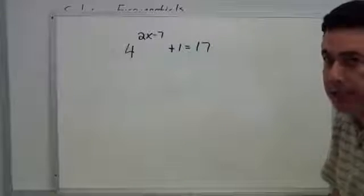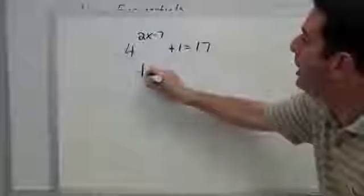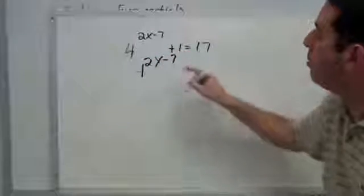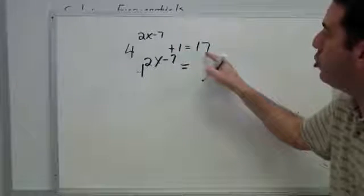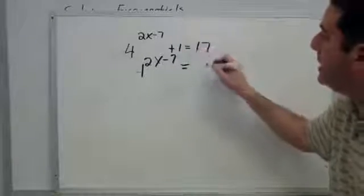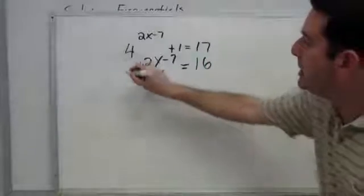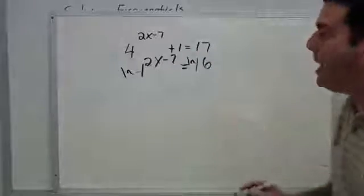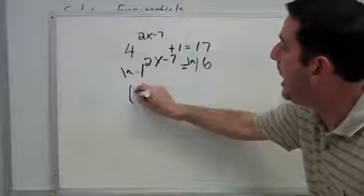Again, I need to start by isolating the exponential part. So let's move that 1 across. It was added this time, so I'll subtract to move it. 17 minus 1 gives me 16. Now let's take a log of each side in order to be able to move that exponent to the ground where we can get at it.